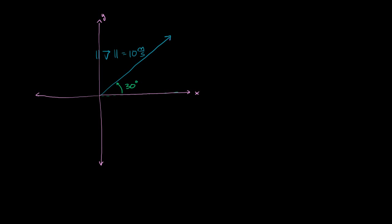Let's break down this vector right over here — I'm just assuming it's a velocity vector v. Its magnitude is 10 meters per second, and it's pointed in a direction 30 degrees above the horizontal.